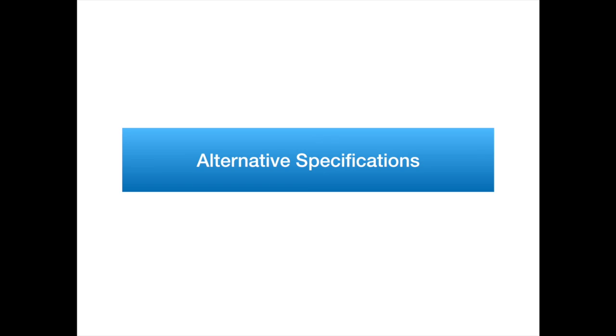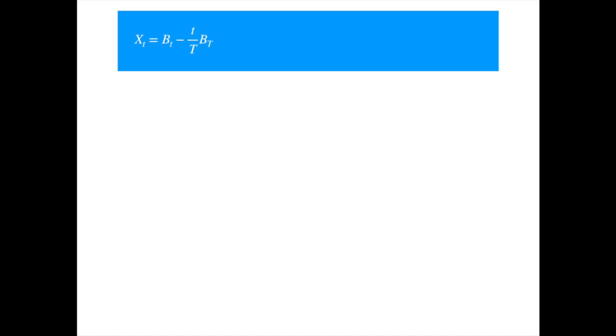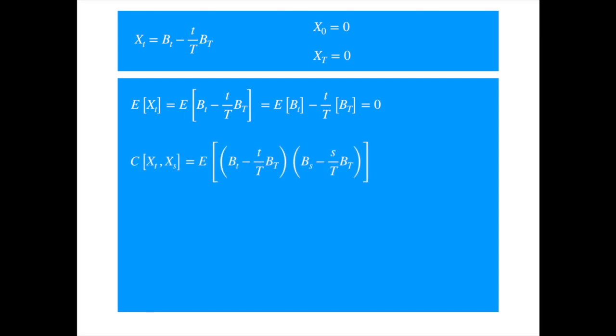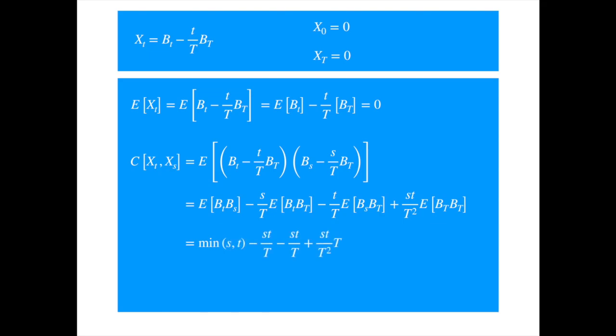Now comes the interesting part. The Brownian bridge is Gaussian with this mean and covariance, but there are many other processes involving Brownian motion that give rise to a Gaussian process with this same mean and covariance. We demonstrate with a few examples. Let X be defined as follows. We show that this process has the same distribution as our Brownian bridge. It is easy to see that its value is zero at both ends, verified by substituting 0 and T for small t. Taking expectation of both sides, the mean is indeed zero. Expanding the covariance expression and recalling that the covariance of two Brownians is the minimum of the two time subscripts, simplifying gives us the covariance of our Brownian bridge.